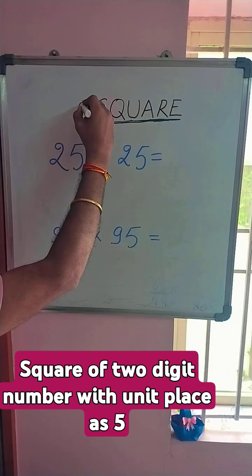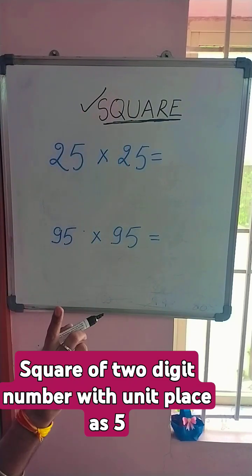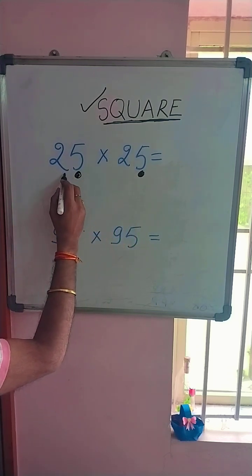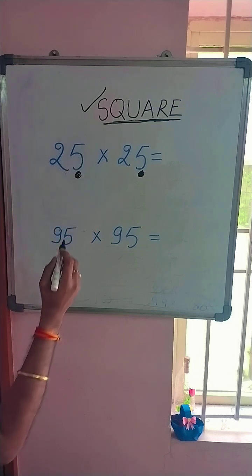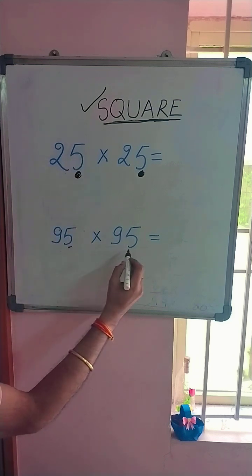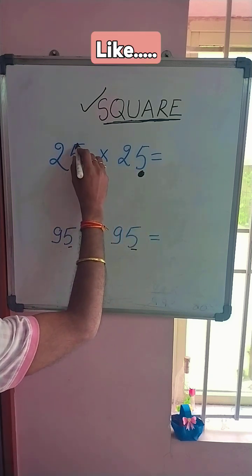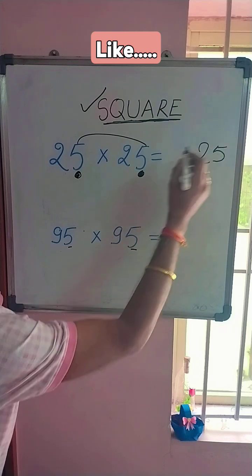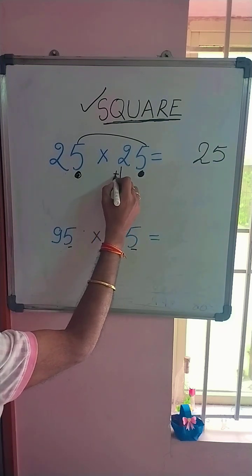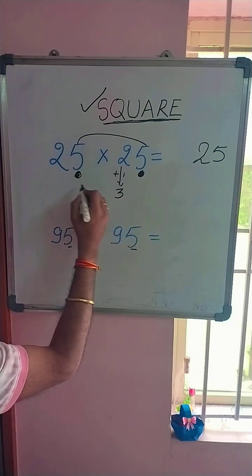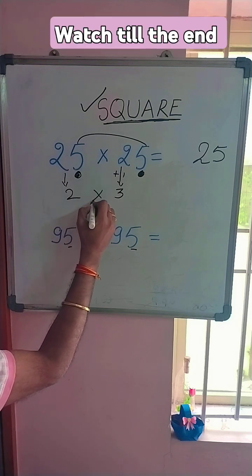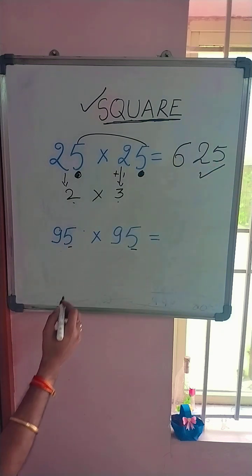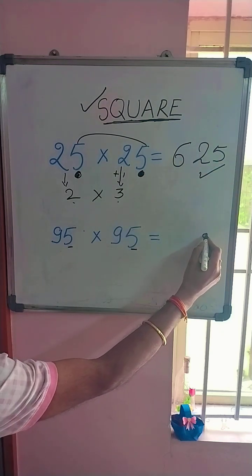Today I am going to teach you about the square of a number whose unit digit is 5. For example, the square of 25 — unit digit is 5. First, 5 times 5 equals 25. Then, 2 plus 1 is equal to 3, and this 2 is 2, so 2 times 3 equals 6. So your answer is 625.